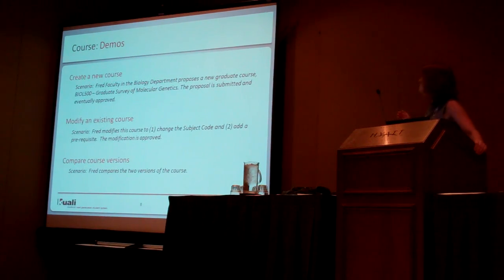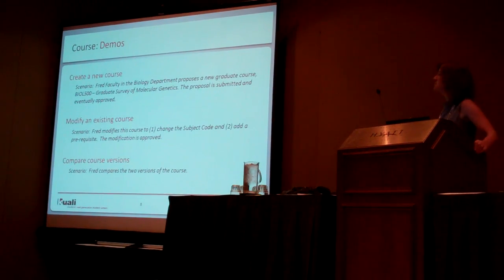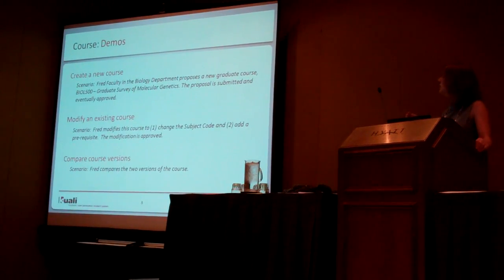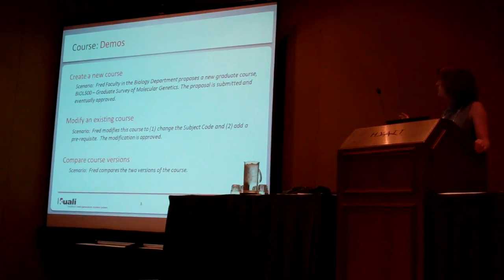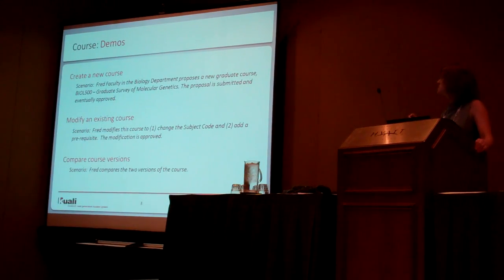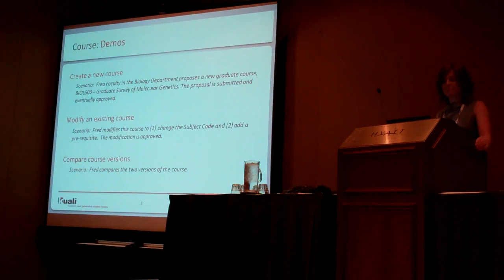Three primary scenarios: first, we're going to have a faculty member of the biology department proposing a new graduate course, biology 500 — we'll watch the proposal be completed, submitted, and eventually approved, and then show up in our learning catalog. The next scenario is modifying an existing course: Fred is going to change the subject code and add a prerequisite, demonstrating our rules system. Then finally, the last scenario is comparing the two versions — the original and the modification.